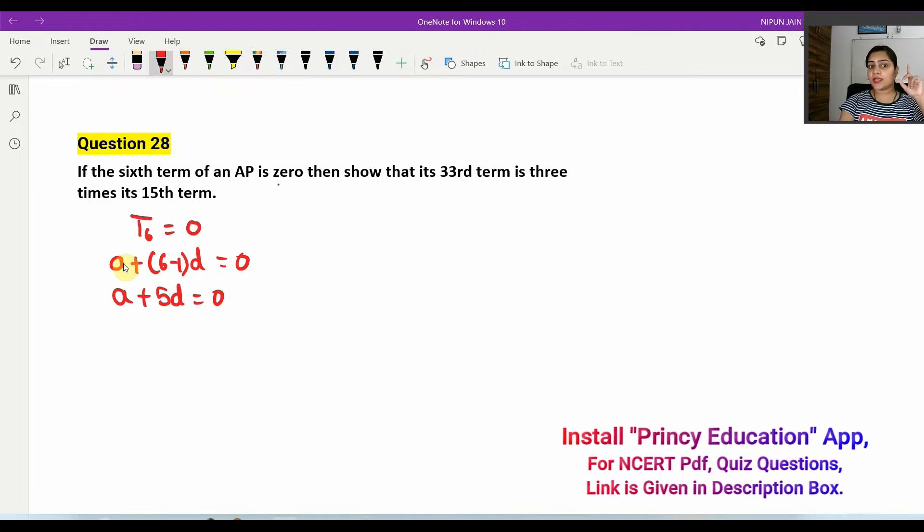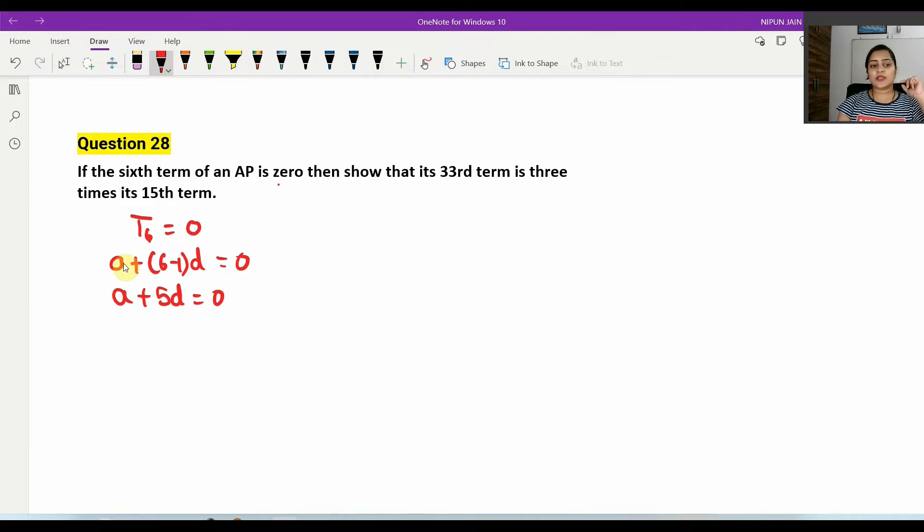So here we have A plus 5D equals to 0. That means A equals to minus 5D. Okay?